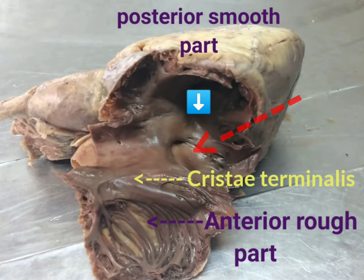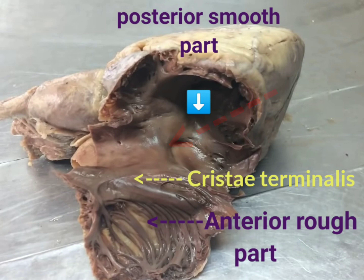We can see a round, oval-shaped smooth depression present in the interatrial septum called the fossa ovalis, which is surrounded by a margin called the limbus fossa ovalis. The fossa ovalis is the embryological remnant of the septum primum, and the limbus fossa ovalis is the embryological remnant of the septum secundum.